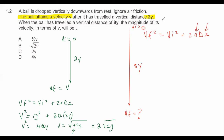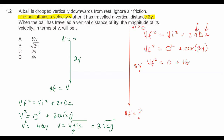Now doing the exact same thing for the second scenario. VF squared equals 0 plus 2 × A × 8y, which gives 16AY. So VF squared equals 16AY. Taking the square root, VF equals 4 times the square root of AY.